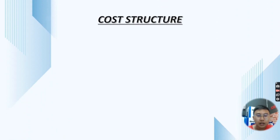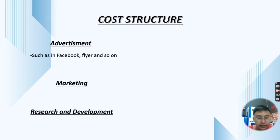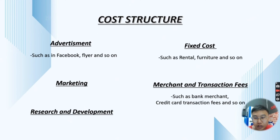Next, it's about the Cost Structure. In cost structure, we have Advertisement, Marketing, Research and Development, Fixed Cost, and Merchant and Transaction Fees. For Advertisement, examples include Facebook ads, flyers, and so on. Fixed costs include rental fees, furniture, and so on. Merchant and transaction fees include bank merchant fees and credit card transaction fees.